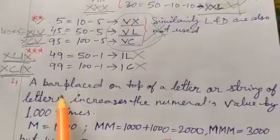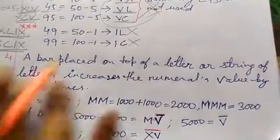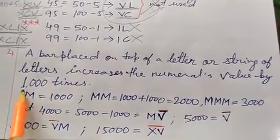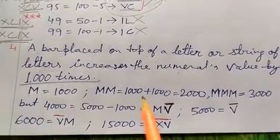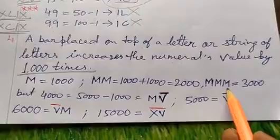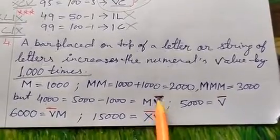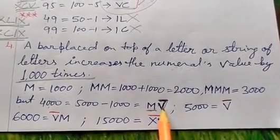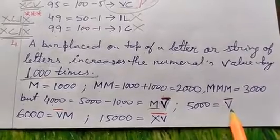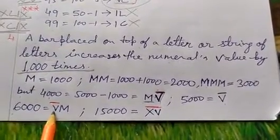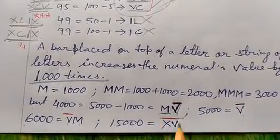Rule number 4: a bar placed on top of a letter or group of letters increases the numeral value by 1000 times. We know M is 1000, MM is 2000, MMM is 3000. But for 4000, we cannot write M four times, so we take V-bar (5000) and subtract M (1000) to get 4000 — written as V̄ with M before it. For 5000, write V̄. For 6000, write V̄M (5000 plus 1000). For 15000, write X̄V̄ — that is 15 with a bar on top.